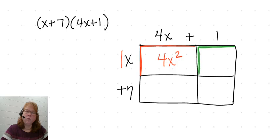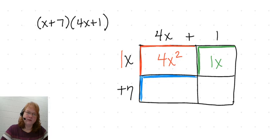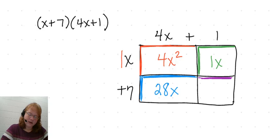For the second rectangle, we have 1 and 1x. Now 1 times 1x is 1x. For the third rectangle, we have 4x times 7. 4x times 7 is 28x. And for our last rectangle, we have a 1 by 7, and 1 times 7 is 7. So the area model gives us the four pieces for this expression, but we do need to add them together to get the total area.